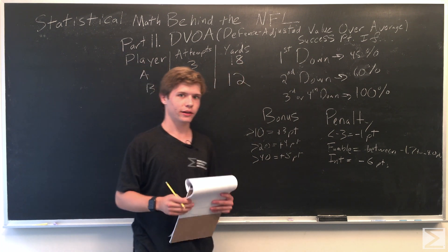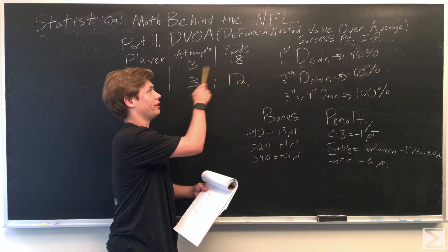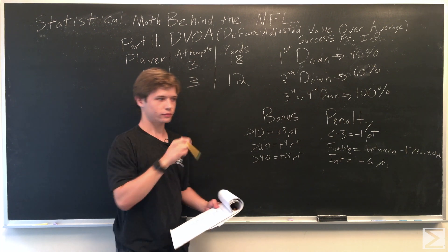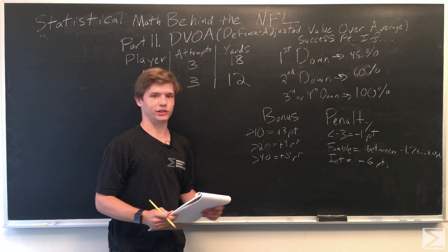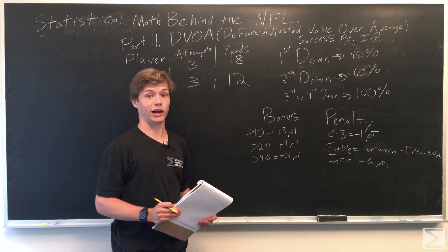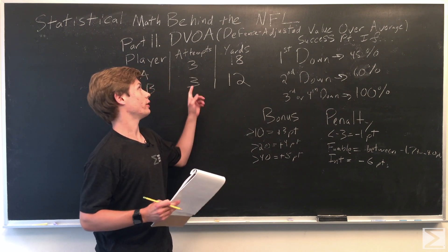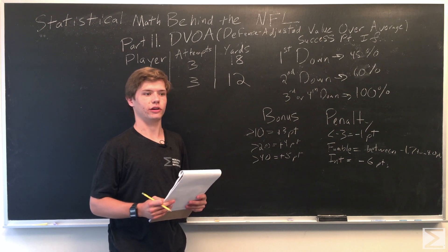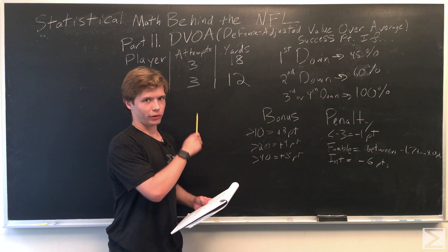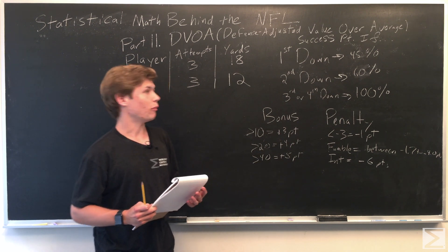So now we'll go back to the original players. As you can see, again, 3 and 18 for player A and 3 and 12 for player B. So we will do a situation to show that player A is not necessarily better than player B. And we'll assume that for three attempts, the average number of points on plays like this is equal to 1.5.